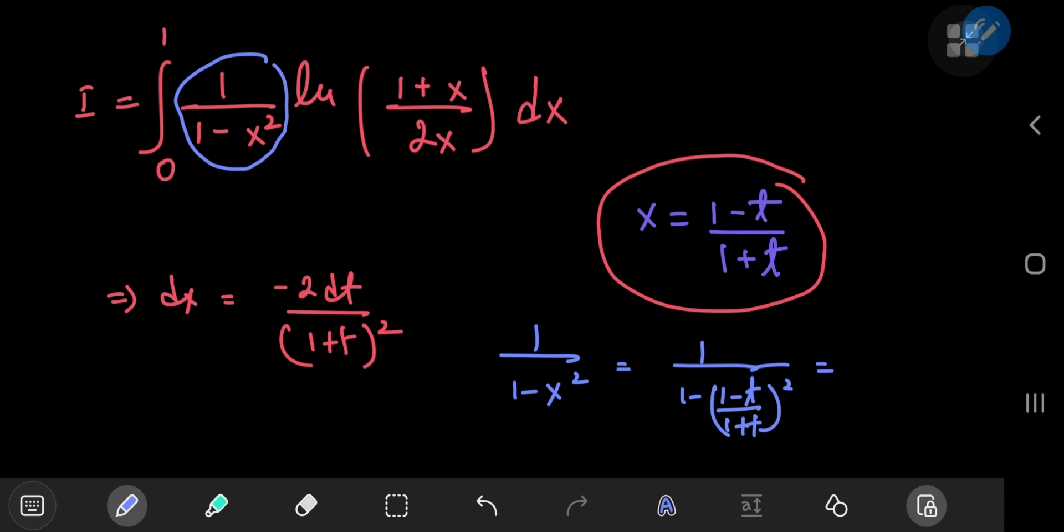which simplifies out to 1 plus t squared up here in the numerator. And down here you should have 4t squared. Oh no wait, it's definitely going to be 4t. Yeah, 4t is what you're going to have.